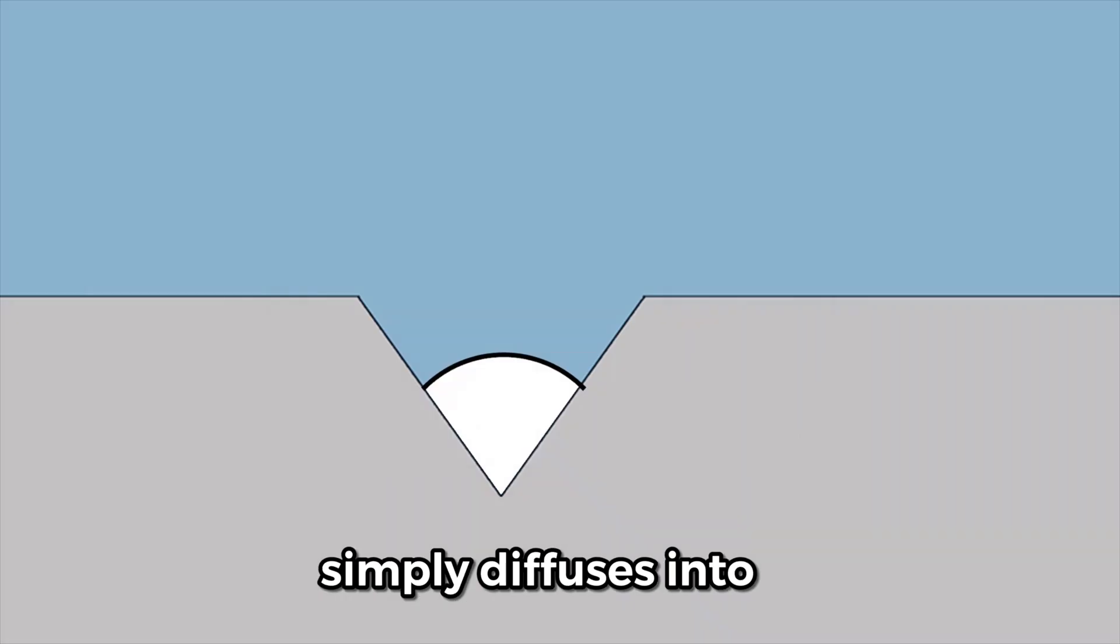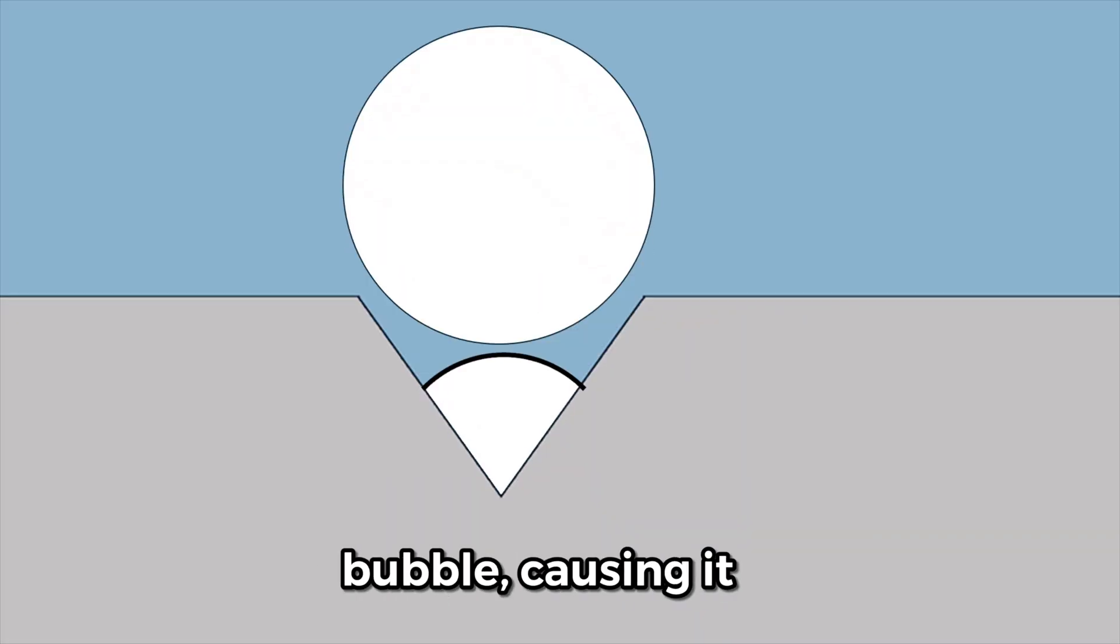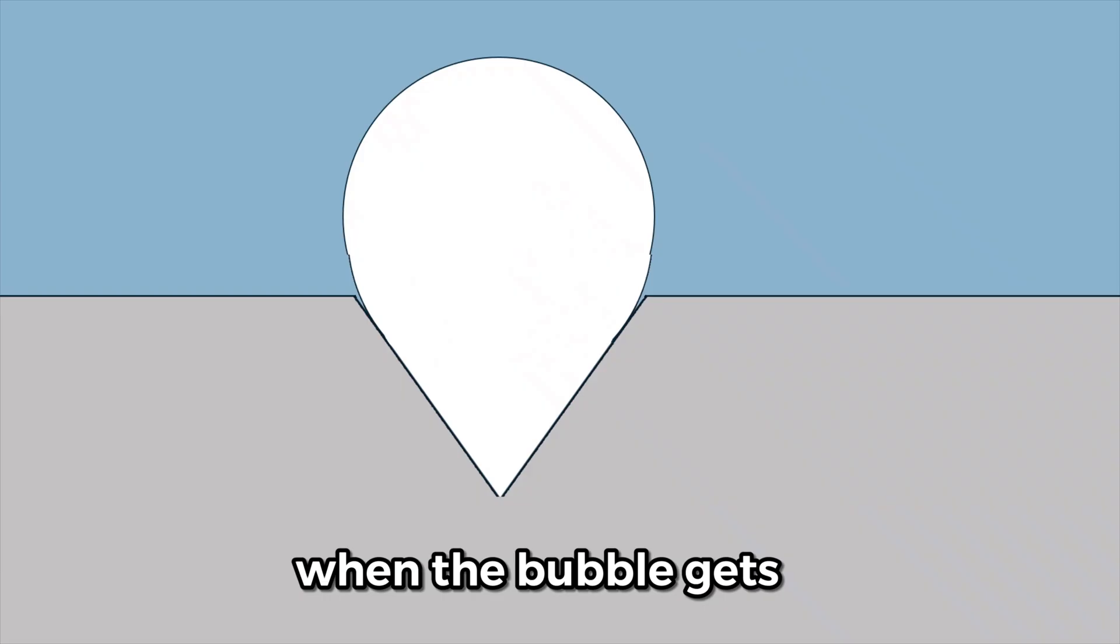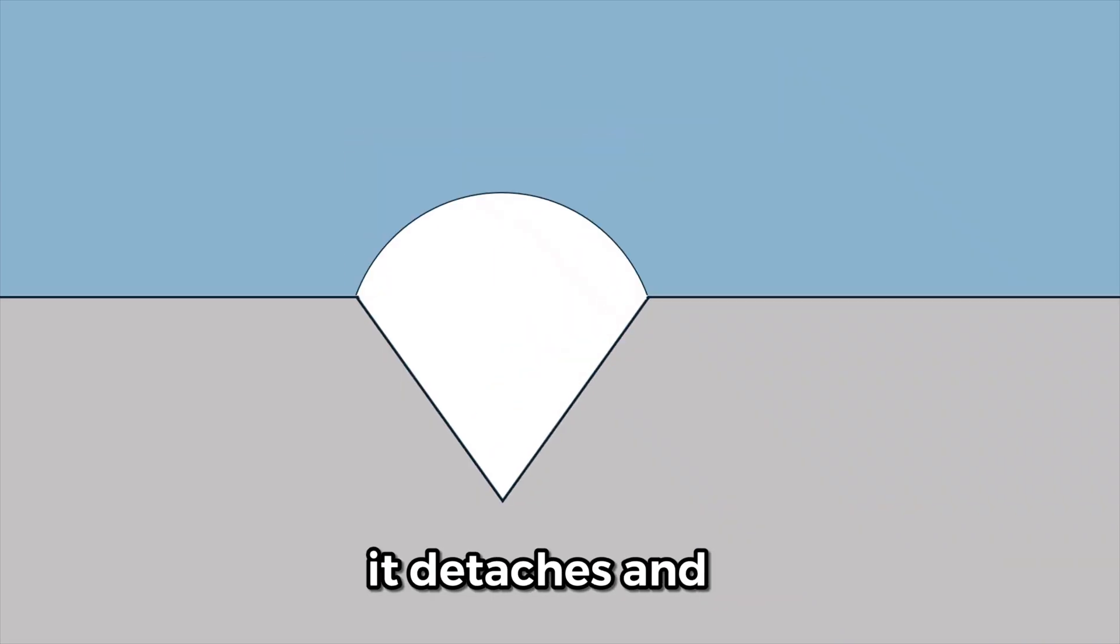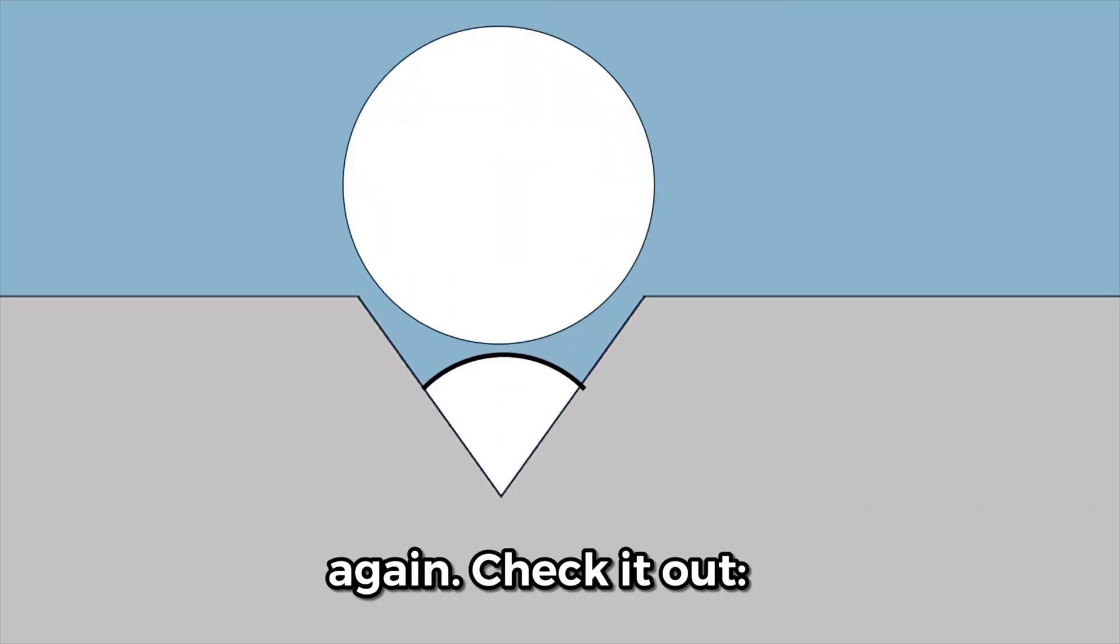Dissolved carbon dioxide simply diffuses into this pre-existing bubble, causing it to grow. When the bubble gets large and buoyant enough, it detaches and rises, leaving behind another air pocket where the process begins again.